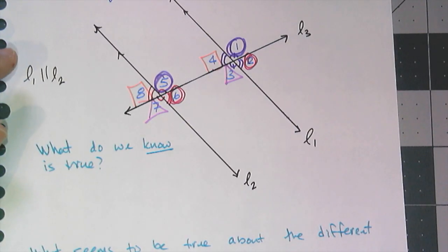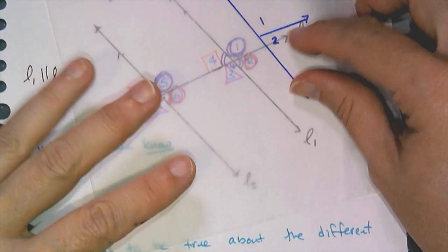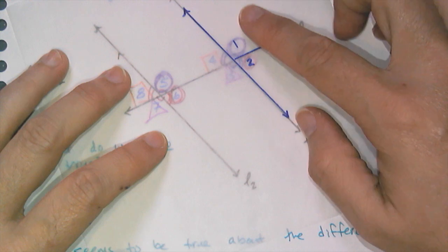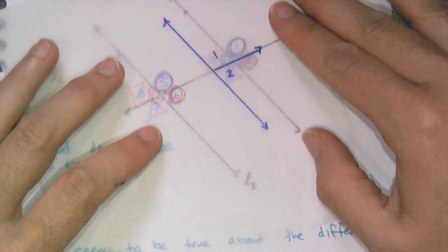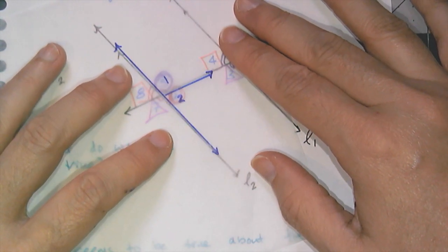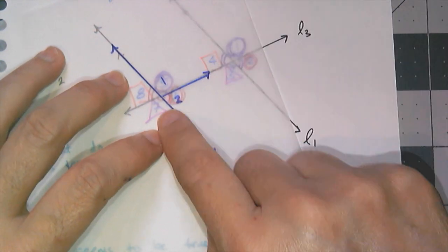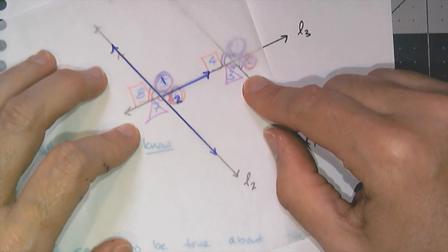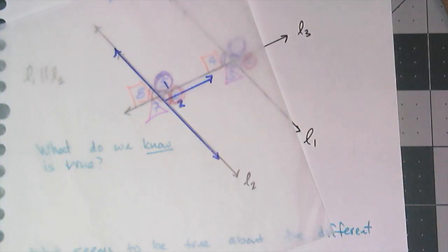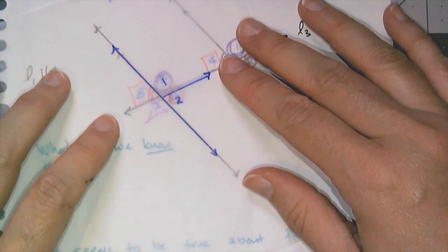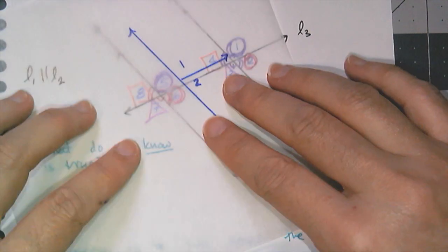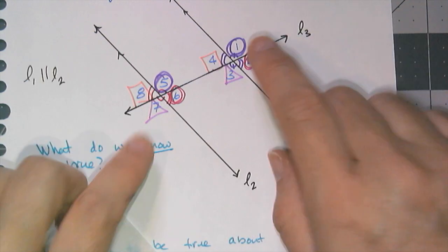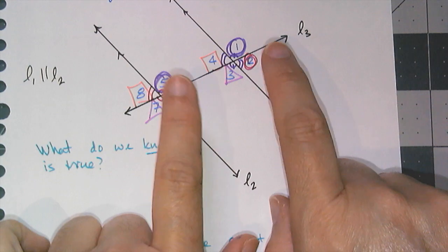Now that I know what corresponding angles are, let's do a little informal measuring to see what's true. I have a copy here on patty paper — it's like tracing paper — and I've copied angles 1 and 2 onto it. If I scoot it down, check it out — the corresponding angles match up. Angle 5 and angle 1 look congruent, and angle 2 and angle 6 look congruent. If I were to draw more sets of parallel lines cut by different transversals at different angles, I'd see the same thing happen over and over again. That's because corresponding angles are congruent when you have parallel lines cut by a transversal — so angles 1 and 5, 4 and 8, 3 and 7, and 2 and 6 are all congruent.